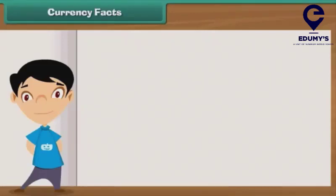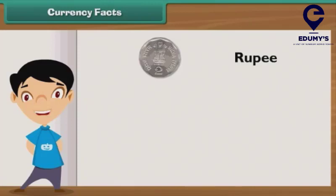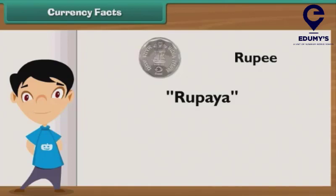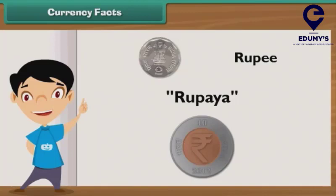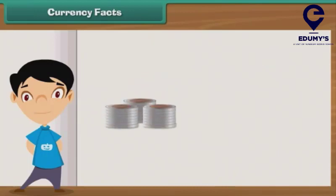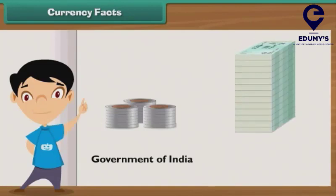Currency facts. The Indian currency is known as the rupee. The word rupee comes from the Sanskrit word rupaya, which denoted the stamped coins used in ancient India. This symbol is associated with the Indian rupee. Indian currency is made up of coins and notes known as bank notes. While the coins are minted by the Government of India, the bank notes are issued by the Reserve Bank of India (RBI).